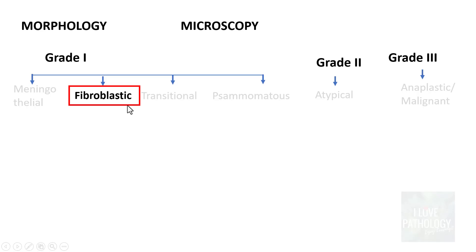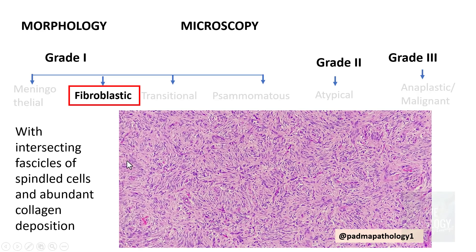The second type is fibroblastic meningioma. As the name suggests, it contains fascicles of spindle-shaped cells with abundant collagen deposition in between. You find these intersecting fascicles composed of spindle-shaped cells with abundant collagen — that is the fibroblastic type of meningioma.